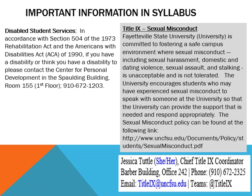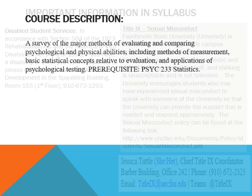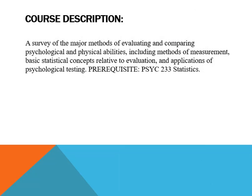If you have any concerns regarding these topics, please review the syllabus carefully and act accordingly. For the course description, Psych 390 is a survey of the major methods of evaluating and comparing psychological and physical abilities, including methods of measurement, basic statistical concepts relative to evaluation, and applications of psychological testing. The prerequisite for this course is Psych 233 or statistics.